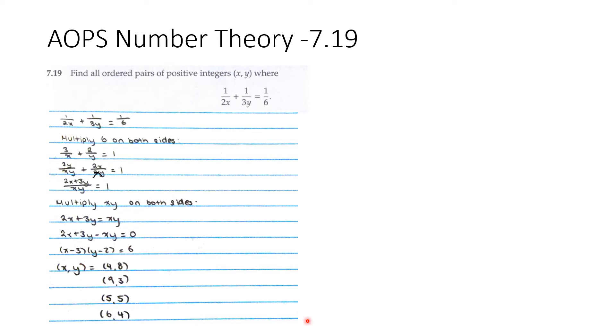So we change the two denominators into xy. So 3y/xy + 2x/xy = 1. So (2x + 3y)/xy = 1. If we multiply xy on both sides, we get 2x + 3y = xy.